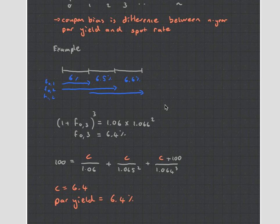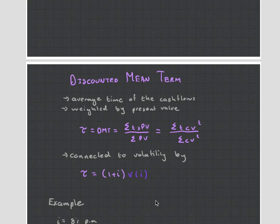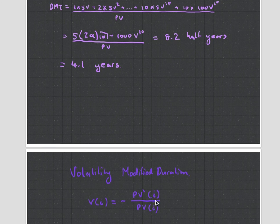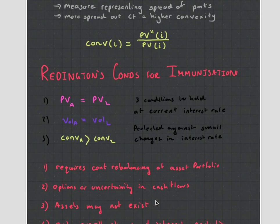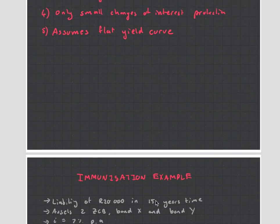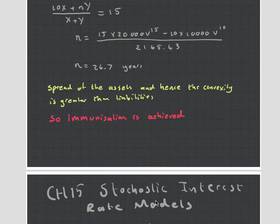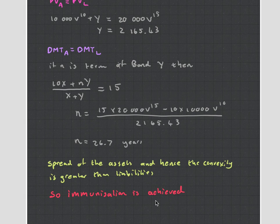That's all for this video. In the next one we're going to talk about discounted mean term, modified duration, convexity, Reddington's conditions for immunization, and go through an example. Then there's chapter 15 on stochastic interest rate models, which I'm also getting around to making. Thanks for watching, I hope you enjoyed this video.